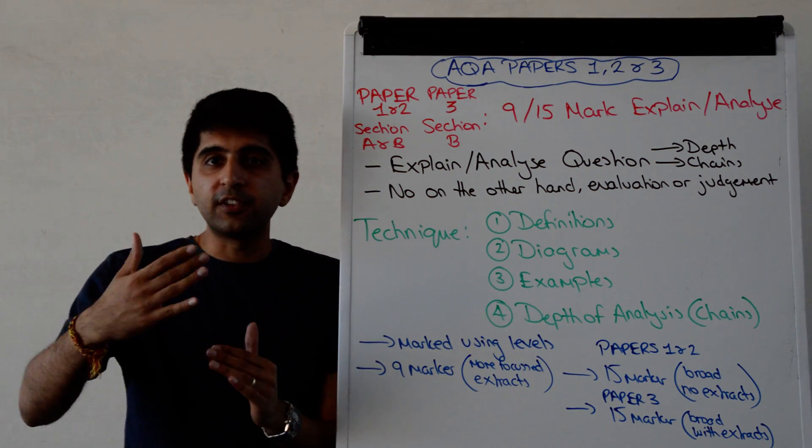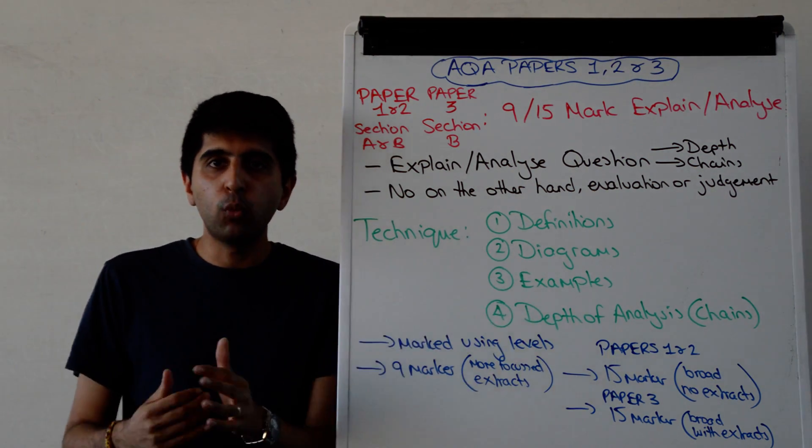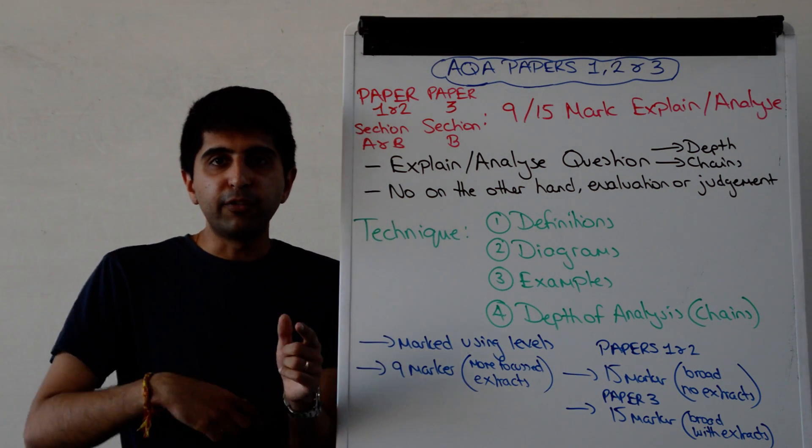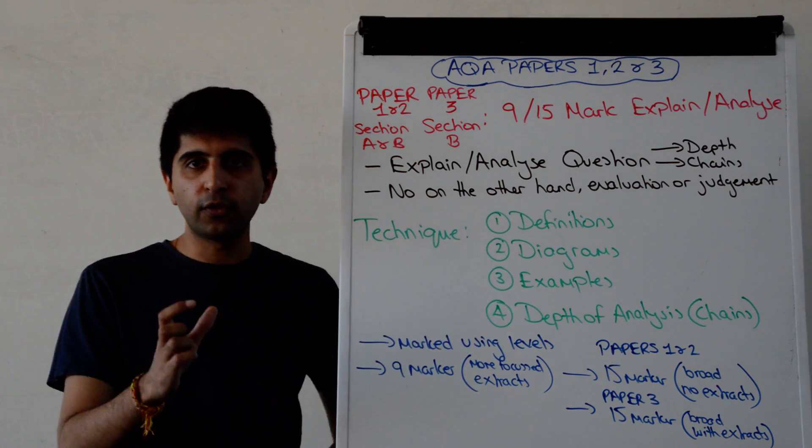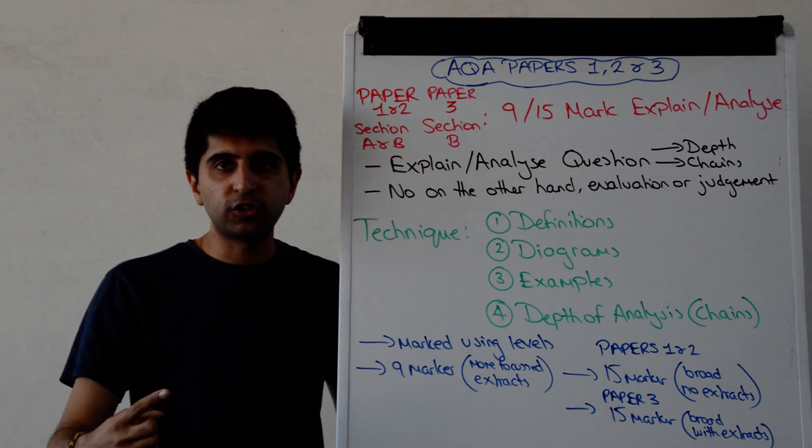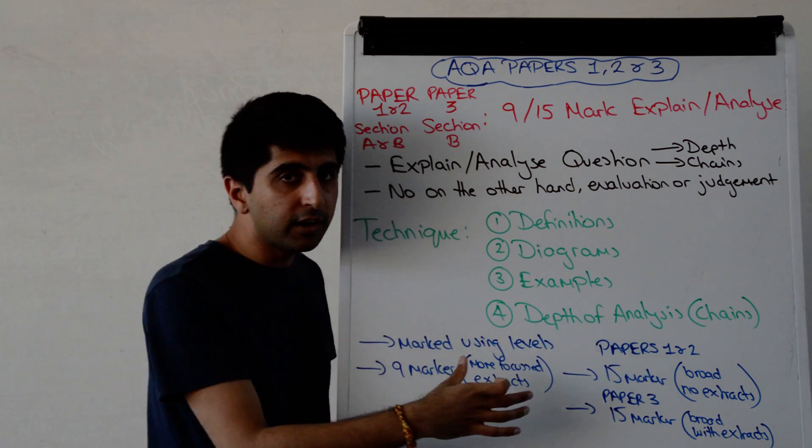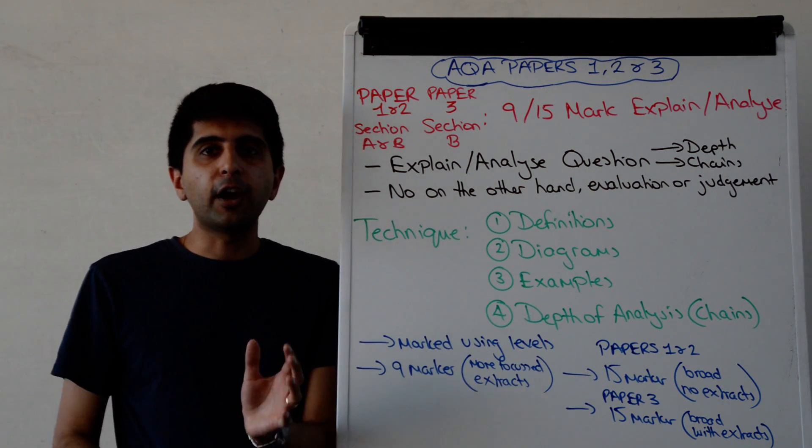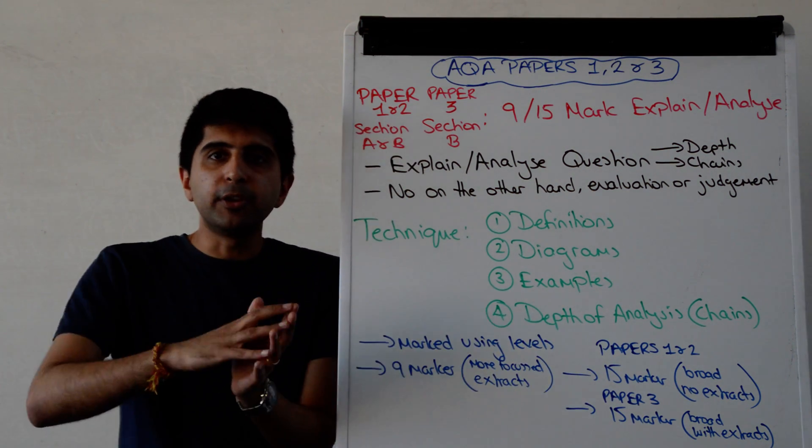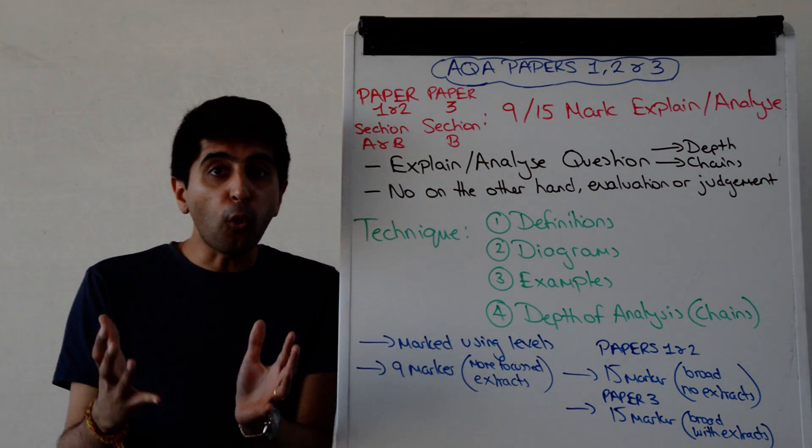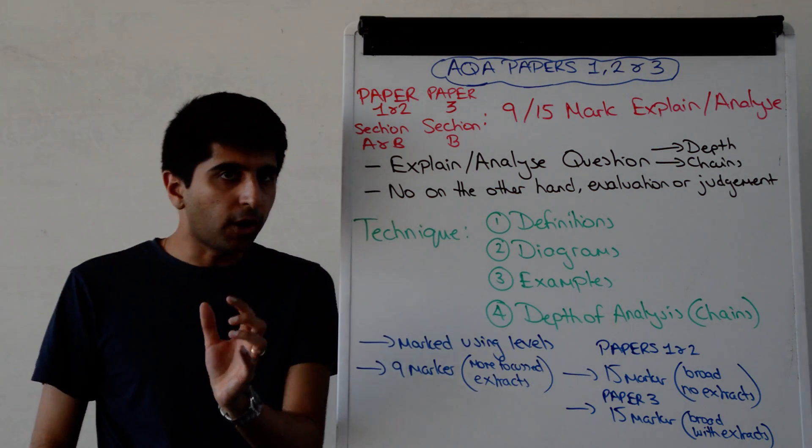But also make sure that the diagram is drawn accurately and is explained in full detail. So explaining the shift. If you're shifting a curve on there, explain why you're shifting a curve. Refer to the shift. If there is any action on the axis, on the y-axis or the x-axis, refer to those changes and explain why those changes are occurring. So full detail is required on the diagram. The diagram itself has got to be accurate. But you need to explain the diagram. You've got to talk about the diagram for you to get top marks for using it.